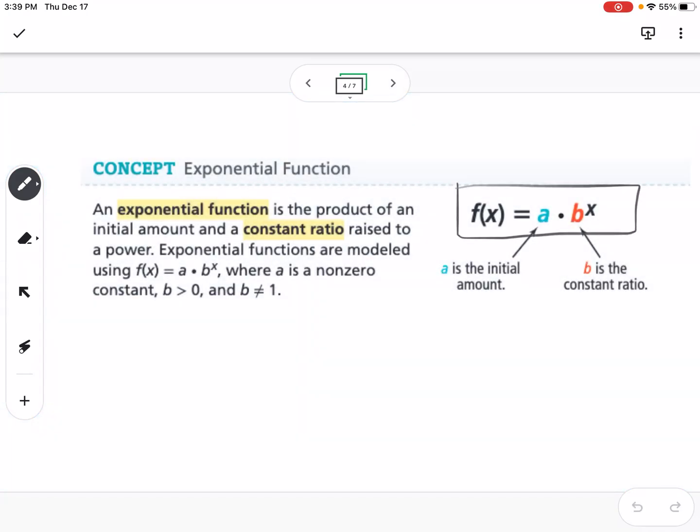So this right here is super important. So our exponential functions are going to be in the form f(x) = a · b^x. A is your initial amount. You can also think about it as your y-intercept. And b is the constant ratio. If b is greater than 1, it's a growth graph. It means it's getting bigger because you're multiplying by a number bigger than 1. And if b is between 0 and 1, like a half or a fourth or 2 thirds, that's going to be a decay graph.